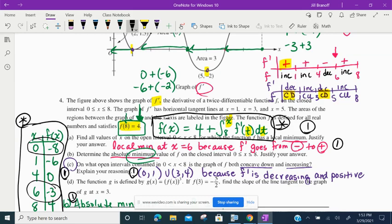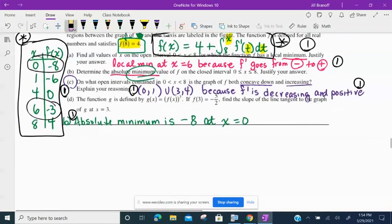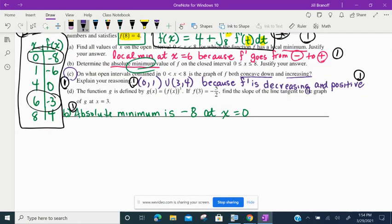You could kind of separate that out if you wanted to and say F is concave down where F prime is decreasing. F is increasing where F prime is positive. Or you can just put it all together like that. And we've got one more part to do. Letter D.